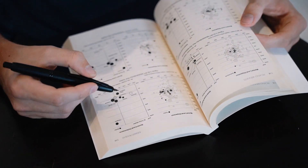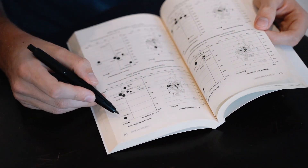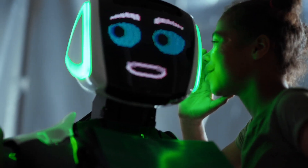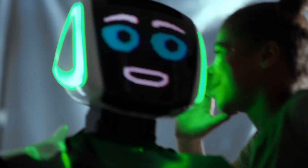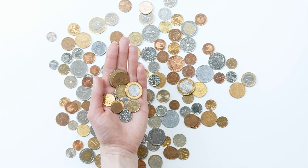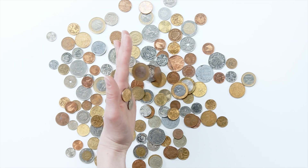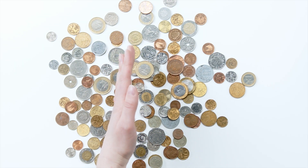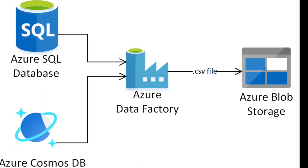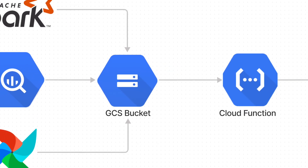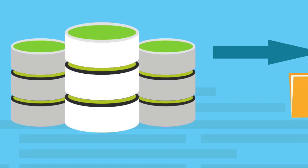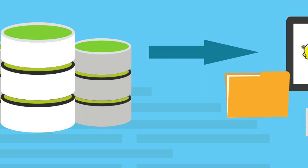Data lakes are typically used for exploratory data analysis, machine learning, and other data science applications. Data lakes are usually built on top of cheap cloud storage, such as Amazon S3, Azure Blob Storage, Google Cloud Storage, or in the case of Spark and Hadoop implementations, HDFS is also a popular option.